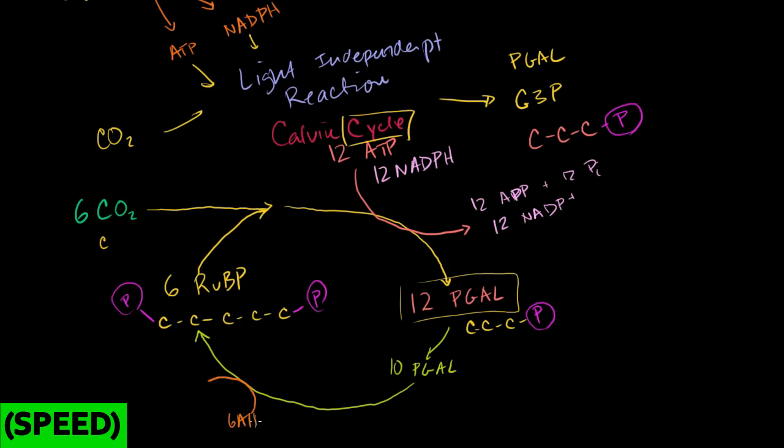So you're going to have 6 ATPs, essentially losing their phosphate group, electrons enter at lower energy states, drive reactions, and you're going to have 6 ADPs, plus 6 phosphate groups that get released. And so you see, it is a cycle, but the question is, well, gee, I used all of these, what do I get out of it? Well, I only use 10 out of the 12.